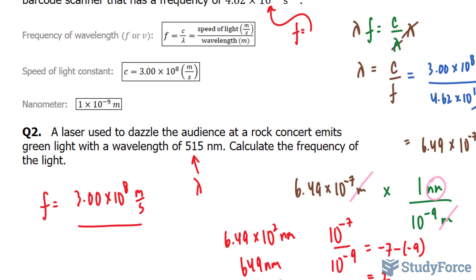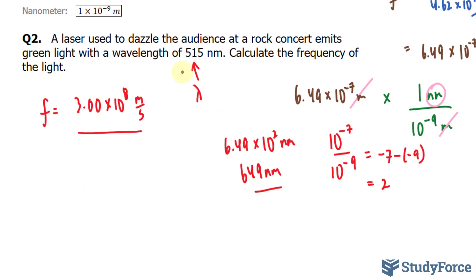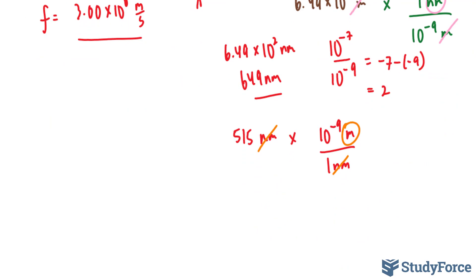And I'm going to temporarily convert 515 nanometers into meters using the same conversion ratio as before. So 515 nanometers times 10 to the power of negative 9 meters per 1 nanometer. This will cancel out with this, leaving us only with meters. So we have 515 times 10 to the power of negative 9.